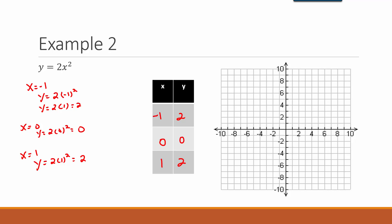So I have the points negative 1, 2 — left one up two; 0, 0 at the origin; and 1, 2 — right one up two. Remember, this produces a curved U-shaped figure, so when I draw this we'll have a little curve. That's our quadratic equation — that's our graph for that one.